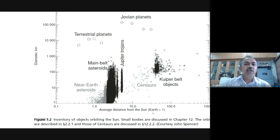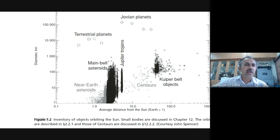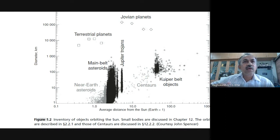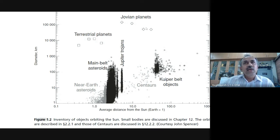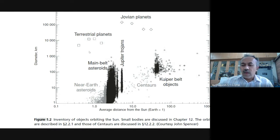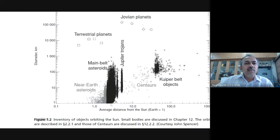This is basically the inventory. Distances from the sun are given with Earth as one unit — AU (Astronomical Unit) — the distance from the center of Earth to the center of the Sun. Looking at the figure: the terrestrial planets, the Jovian planets, Jupiter and Saturn are gas giants, and Uranus and Neptune are ice giants.